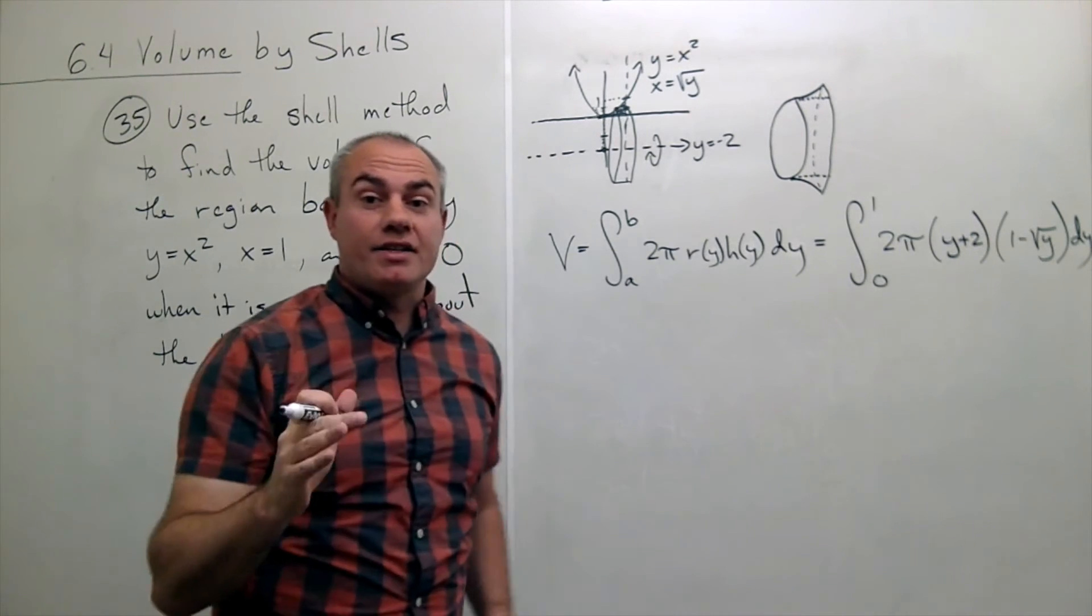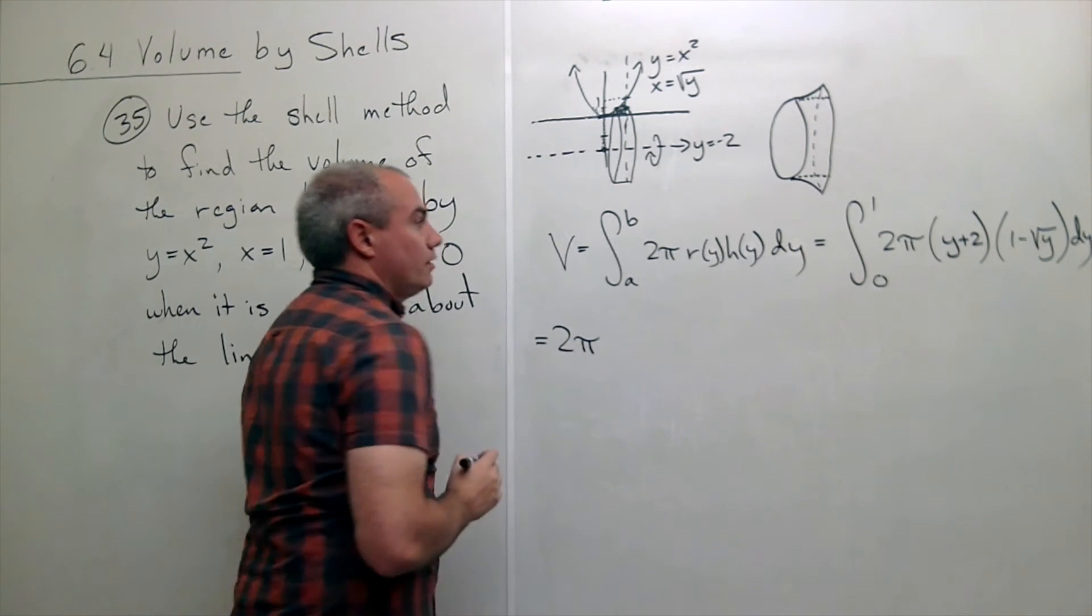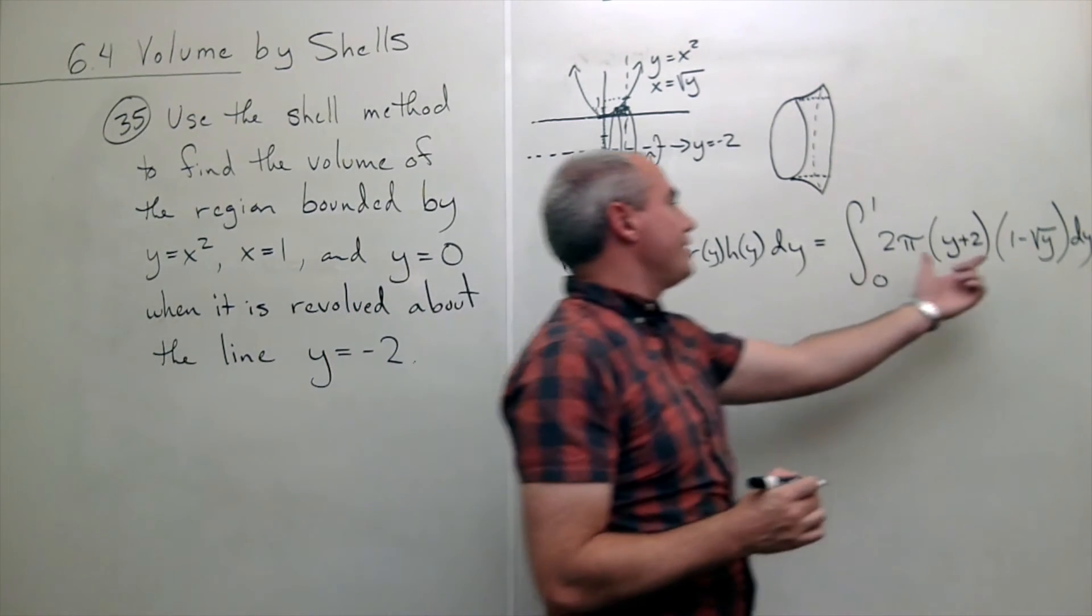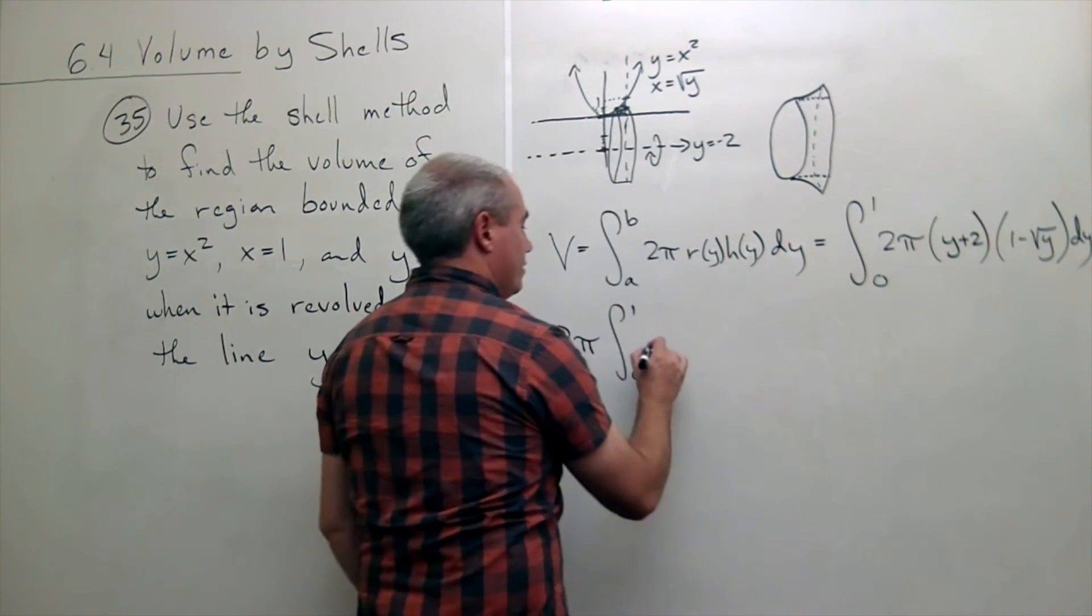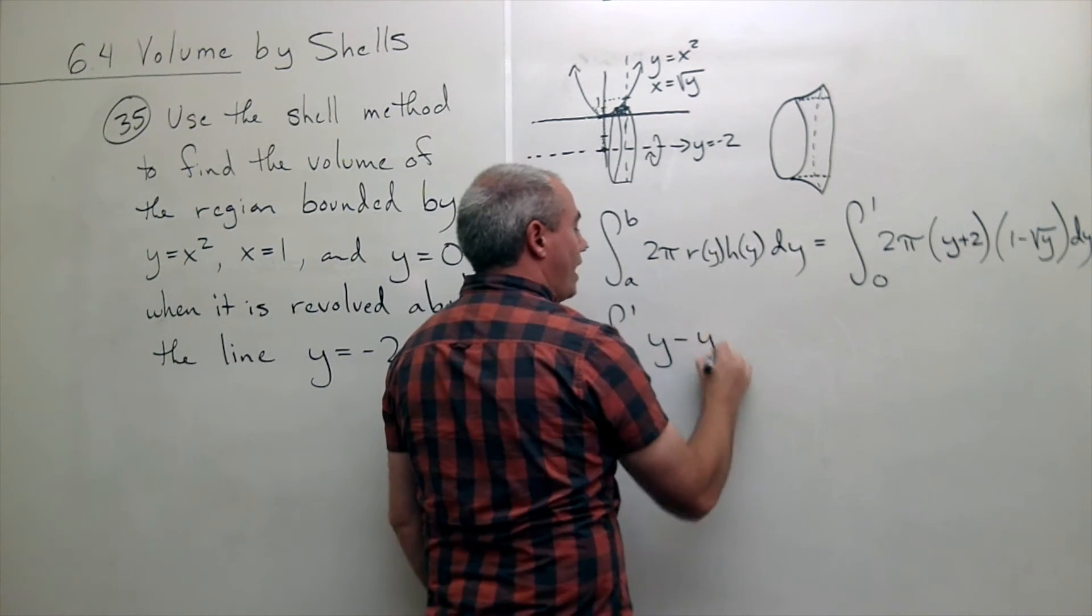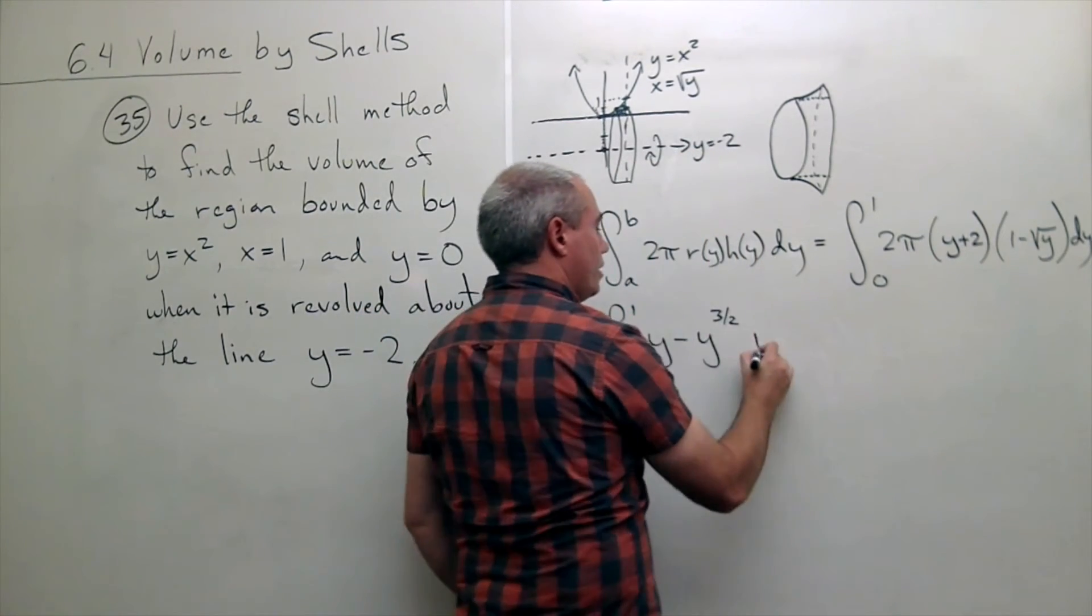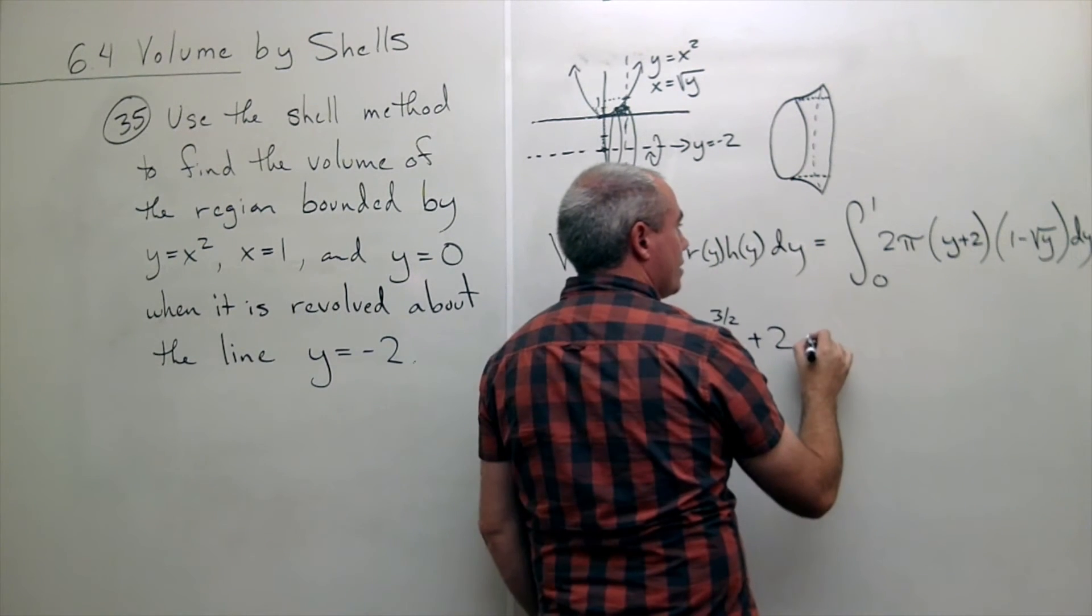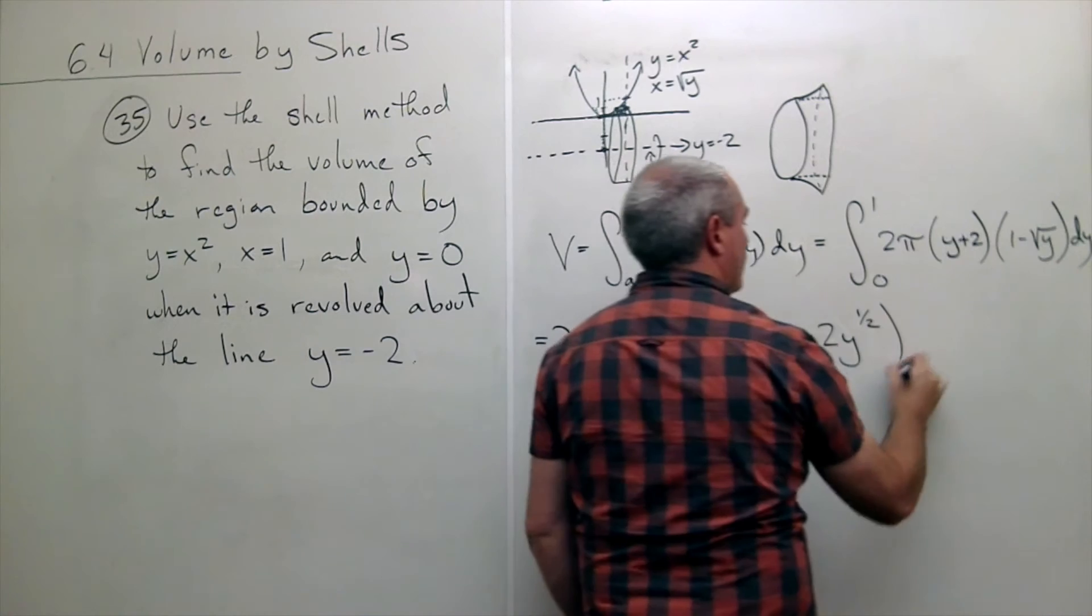Let's get this into a little bit nicer form. I can pull out the two pi, and then I've got integral from zero to one. Let's multiply this out. So if I FOIL this out, I get y minus y times the square root of y, is y to the three over two. Then I get two times one, which is plus two, and then I get two times negative square root of y, which is minus two y to the one half, dy.